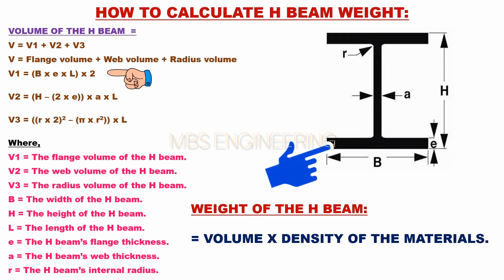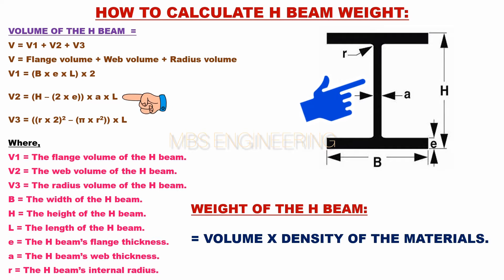V1 is the flange volume of the beam. The formula for V1 equals B into A into L, multiplied by 2. V2 is the web volume of the beam. The formula for V2 equals H minus 2 into A, into A into L.